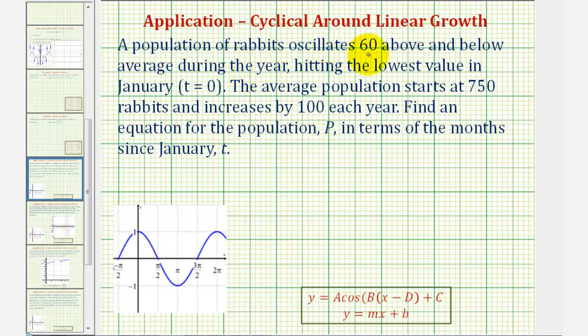A population of rabbits oscillates 60 above and 60 below average during the year, hitting the lowest value in January, which is when t equals zero. The average population starts at 750 rabbits and increases by 100 each year. We want to find an equation for the population p in terms of t, which is the number of months since January.